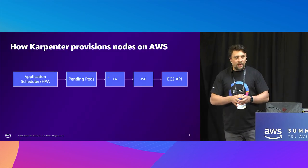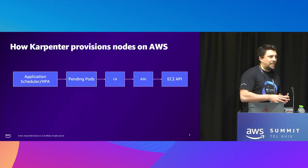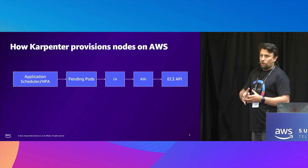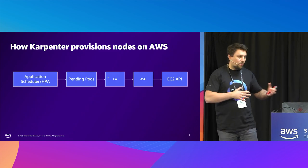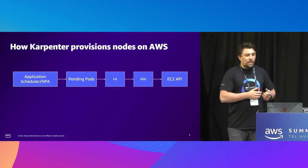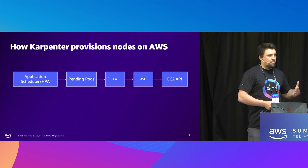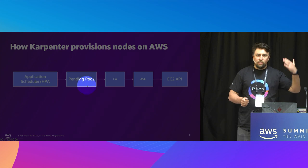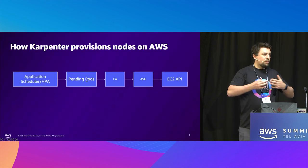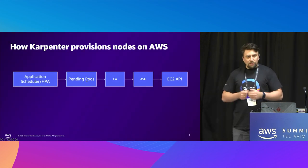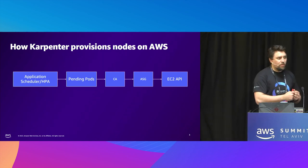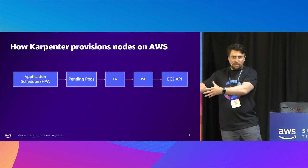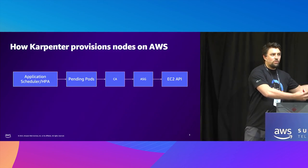Let's see in general how currently we can scale our Kubernetes cluster. For example, I get some new application, or I have my horizontal pod autoscaler, so I get some pending pods. That's my first event — I need to provide some additional resources for this application. Cluster Autoscaler understands this event, communicates with the ASG, ASG communicates with the EC2 API, and only after that provides you some new resources.